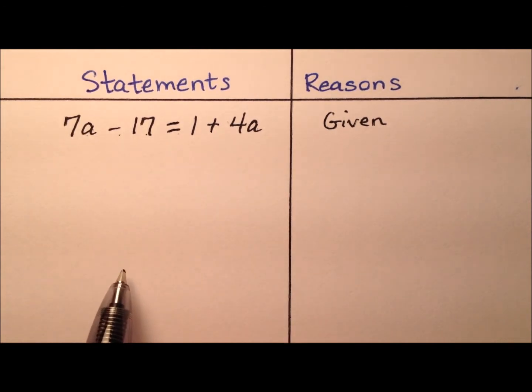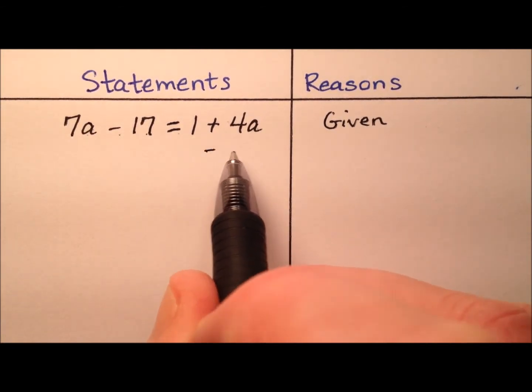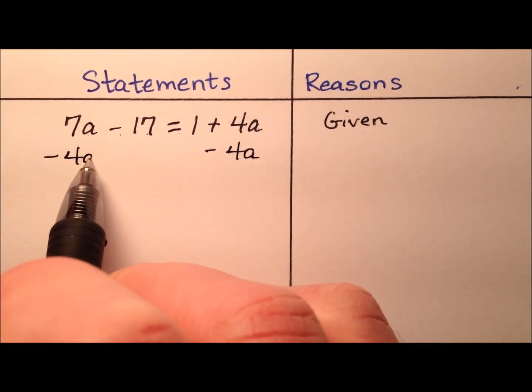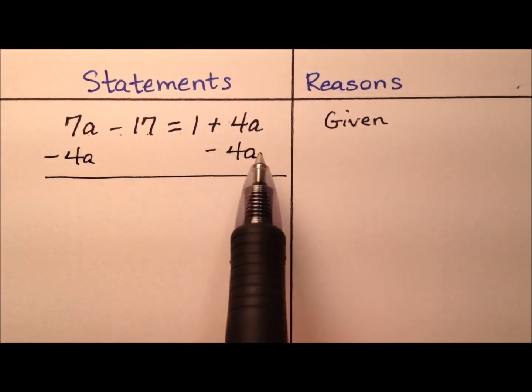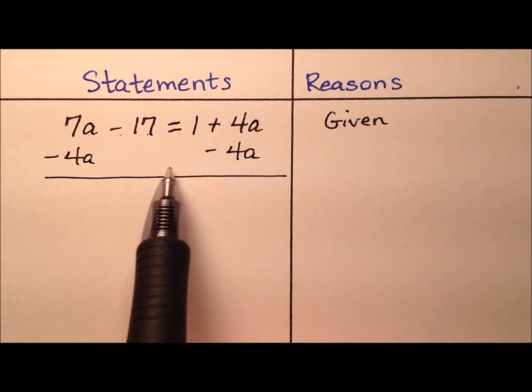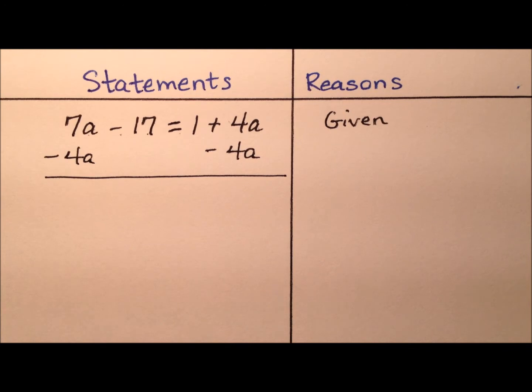Let's go ahead and start by subtracting 4a from both sides of the equation, and we're going to do so in an effort to get the a off of the right side and collect all of the a terms on the left side.